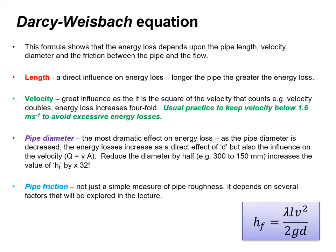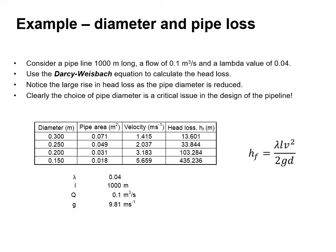Pipe friction is not just a simple measure of pipe roughness — it depends on several factors that will be explored in the lecture. If we consider a pipe 1000 meters long with a flow of 0.1 cubic meters per second and a lambda value of 0.04, we can use the Darcy-Weisbach equation to calculate the head loss. There is a large rise in head loss as the pipe diameter is reduced, so the choice of pipe diameter is a critical issue in pipeline design.